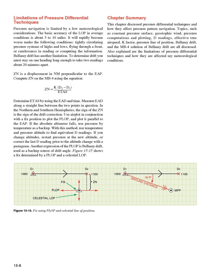Chapter Summary: This chapter discussed pressure differential techniques and how they affect pressure pattern navigation. Topics such as constant pressure surface, geostrophic wind, pressure computations and plotting, D readings, effective true airspeed, K-factor, pressure line of position, Bellamy drift, and the MB4 solution of Bellamy drift are all discussed. Also explained are the limitations of pressure differential techniques and how they are affected by meteorological conditions.